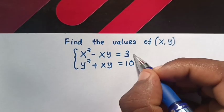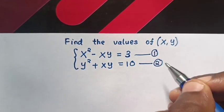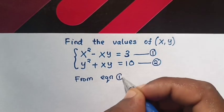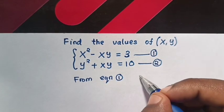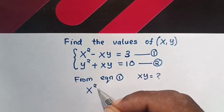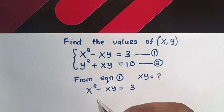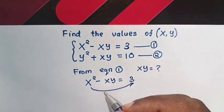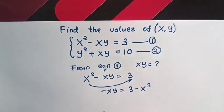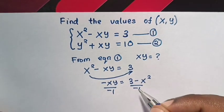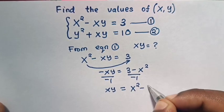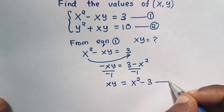First, let this be equation 1 and this be equation 2. Now from equation 1, which is x squared minus xy equals 3, we take x squared y to the right side, so it will be negative xy equals 3 minus x squared y. Then we divide by negative 1 on both sides, so xy equals x squared y minus 3. This will be equation 3.